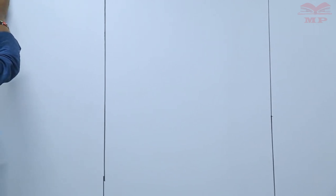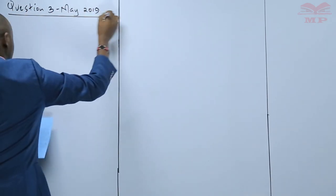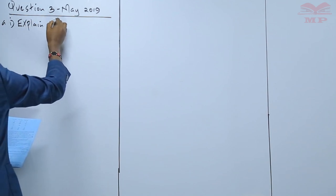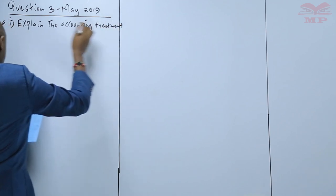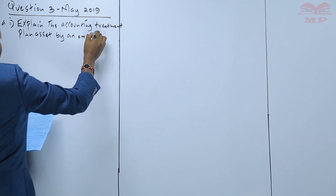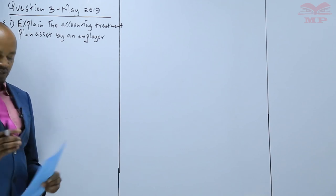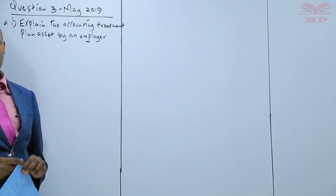What we are required to do is explain how an employer should account for a plan asset. This is question three of May 2019. It requires us to explain the accounting treatment of the plan asset by an employer. Whenever the employer is preparing the financial statement at the end of the year, the plan asset — or what is referred to as the defined benefit pension surplus — should always be accounted for as part of the non-current asset.